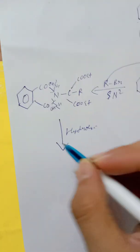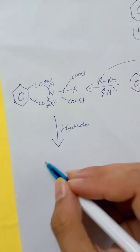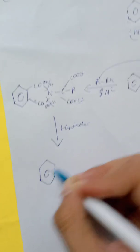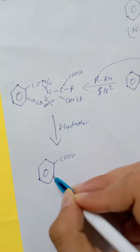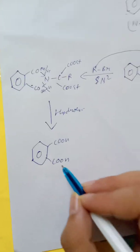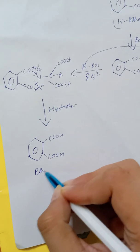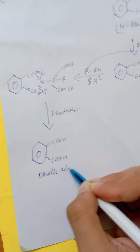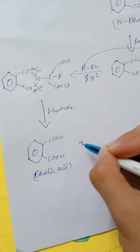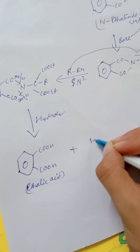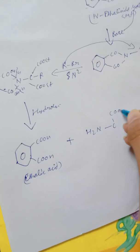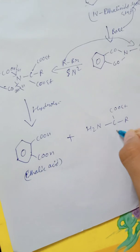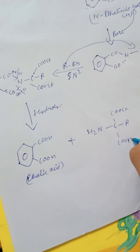Now this will become phthalic acid with COOH COOH, the product, the reactant which we have taken at the very first step and it will come back. Phthalic acid plus the other reactant will be H2N-C with COOC2H5, R, COOC2H5.